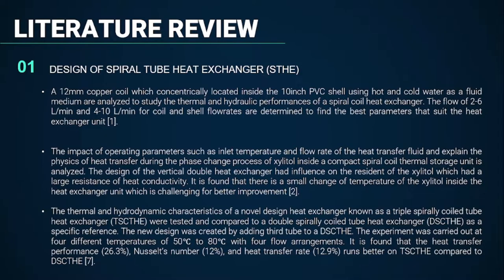Moving on to the literature review, it is divided into 3 subsections. The first is the design of the spiral tube heat exchanger. Three different research papers were reviewed to pick the best design, considering fluid residence, consistency of fluid flow, and the rate of heat exchange. The first research paper proved most suitable as a reference due to its compact 10-inch PVC shell size, longer fluid residence inside the shell, and constant heat exchange across the internal and external domain.